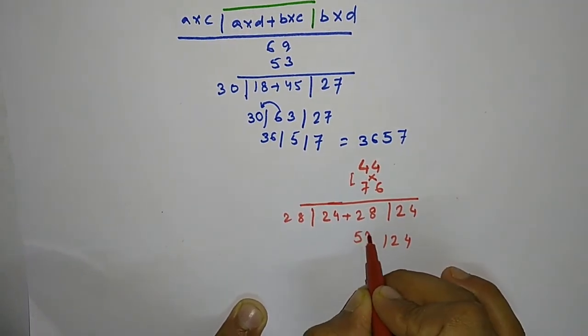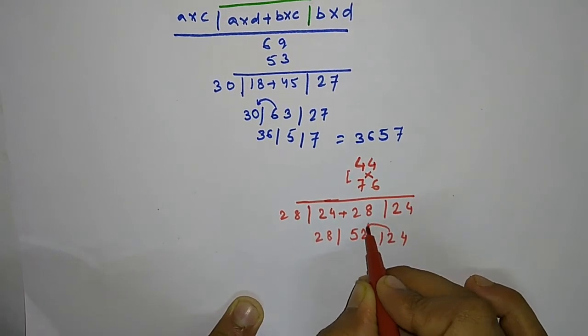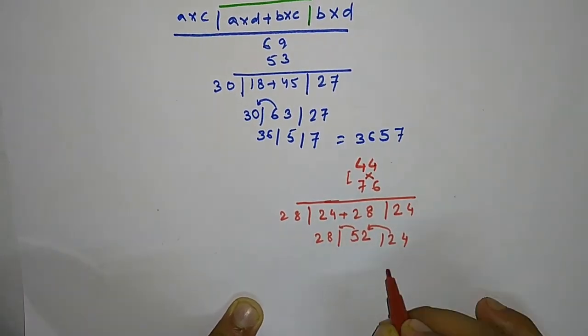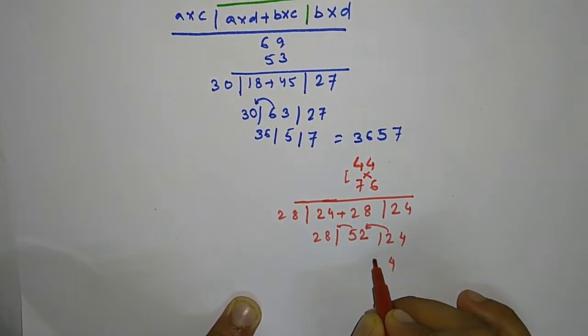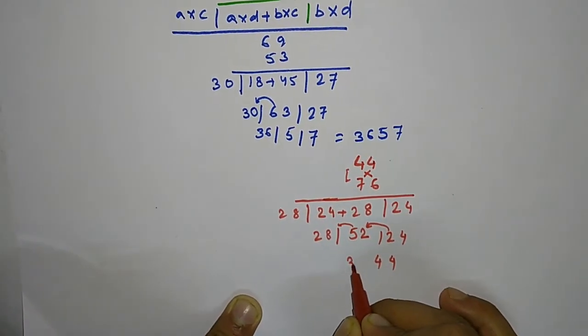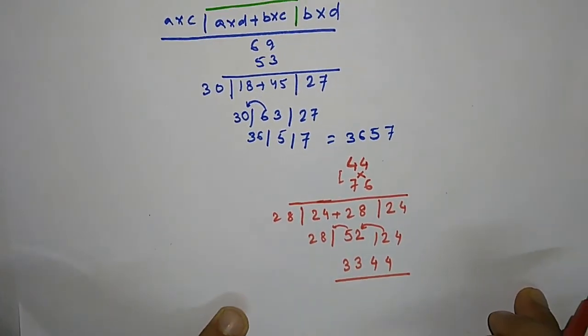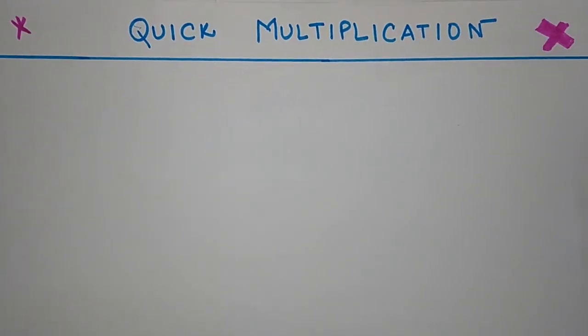Moving on, giving carry overs, this will be 4, this will be 54. 4 carry 5. 28 and 5 will give you 33. So our answer will be 3344.